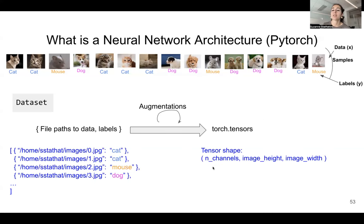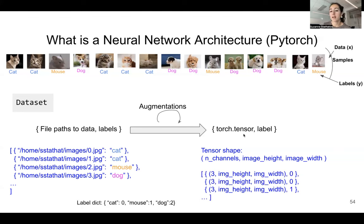A tensor's shape is usually the number of channels, the image height, and the image width. The number of channels in an RGB image is always three. In a grayscale image it's one. For multi-spectral imagery it's typically greater than three — that's fine, though it's difficult to visualize. A torch tensor plus label is typically: number of channels, image height, image width, and then the label. The label is usually converted from a string to a number so it can be in the torch tensor.